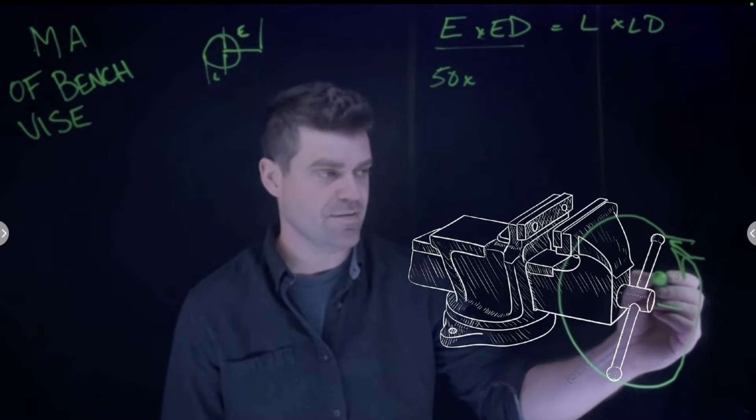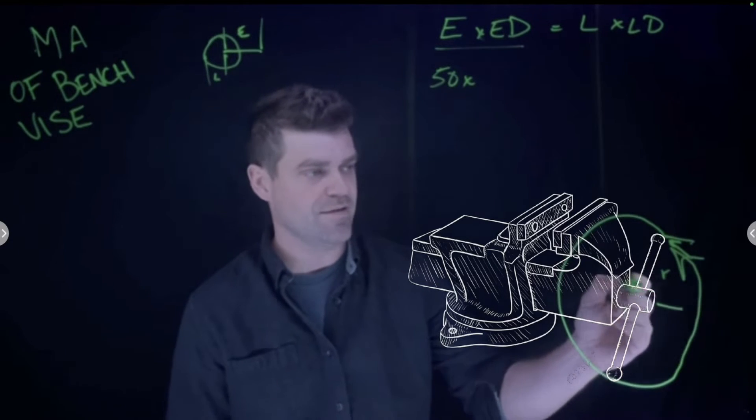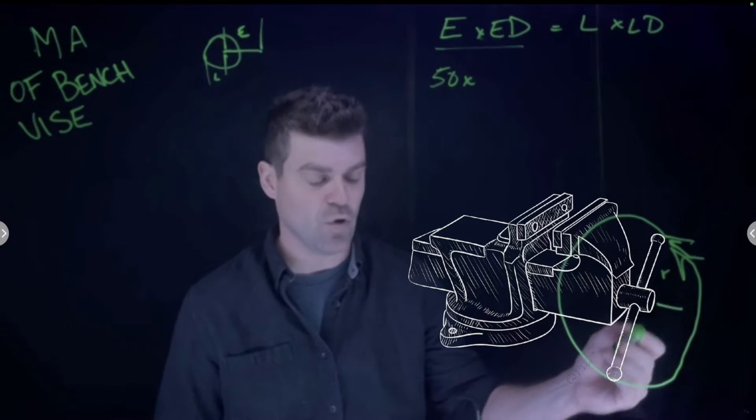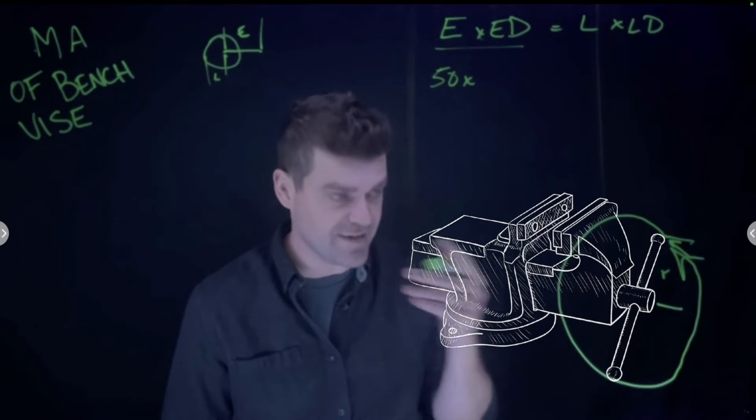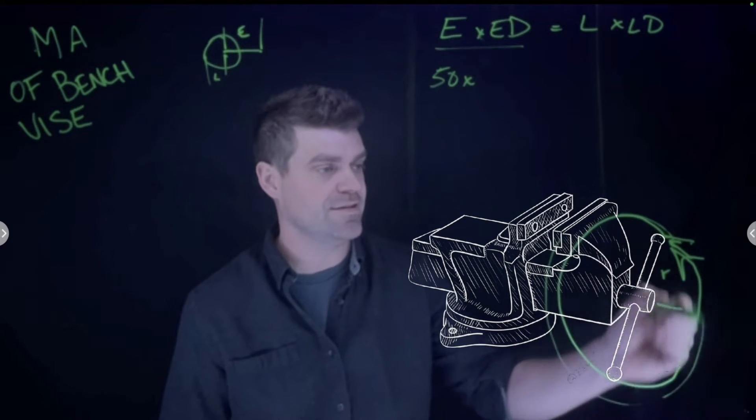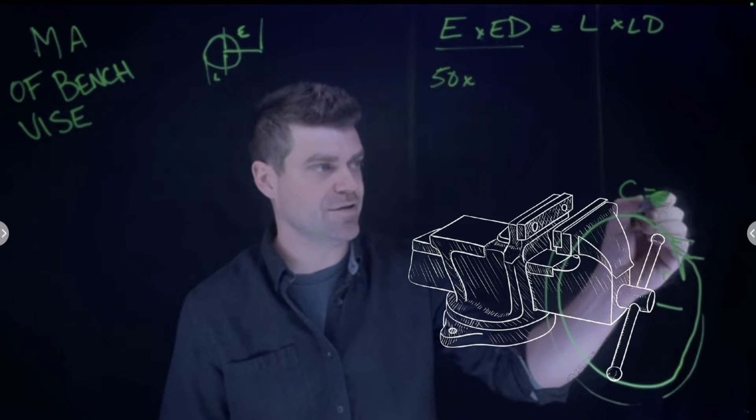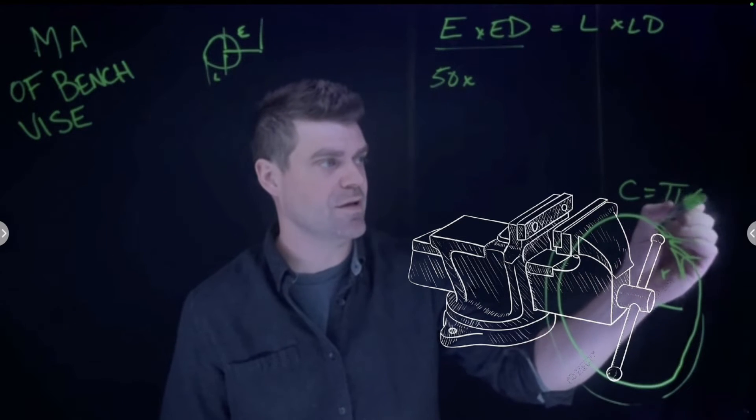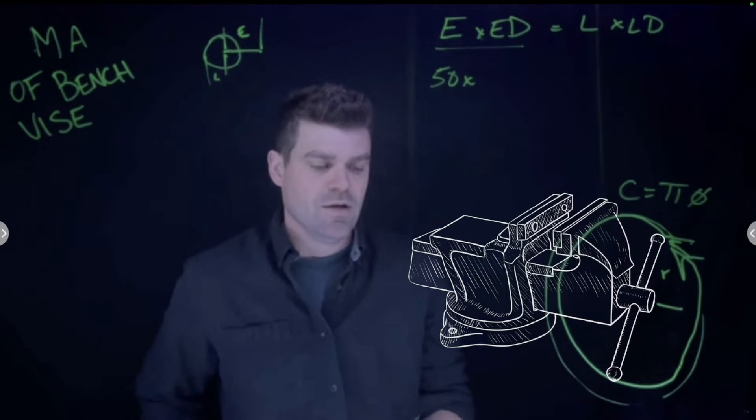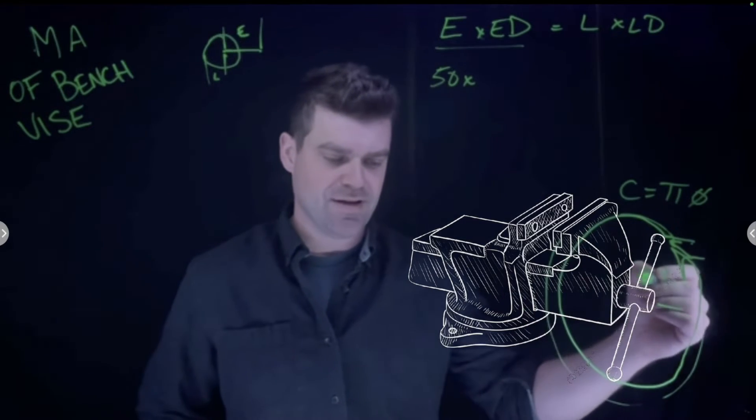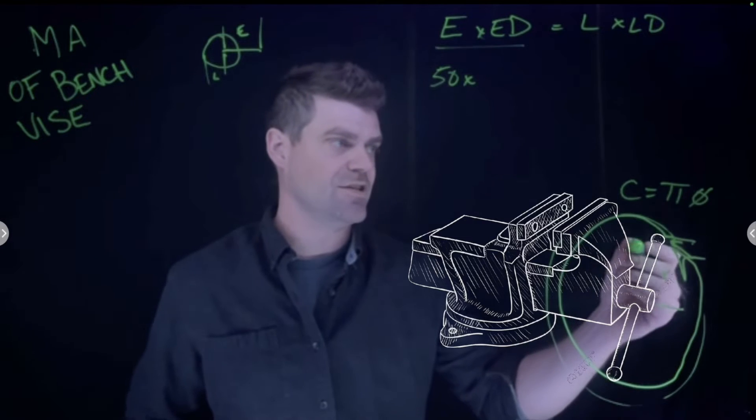To find that, we need to figure out the radius, multiply by two to find the diameter. The circumference, or the distance that this travels, is just your basic circumference equals pi times diameter. Let's say the radius of the handle on this is six inches.